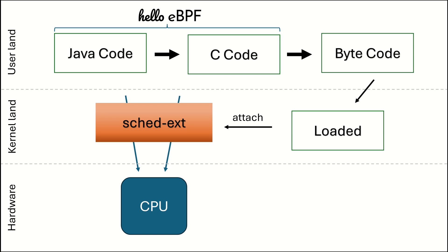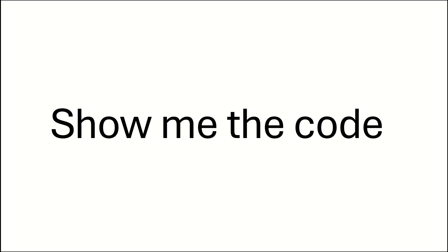How does it work under the hood? You have Java code, and parts of it will be run in userland and parts in kernelland. The code run in kernelland essentially allows you to describe C code in Java code. That part of the Java code is then compiled down to C code via my project Hello eBPF. Then the C code is compiled to eBPF bytecode and is loaded into the Linux kernel via libBPF and attached to the scheduler extensions to create your own scheduling policy, which then schedules all the processes — including those on this very system where I'm doing this presentation.